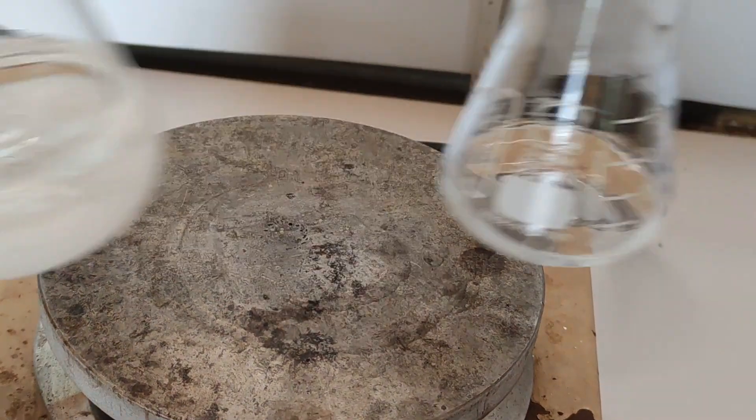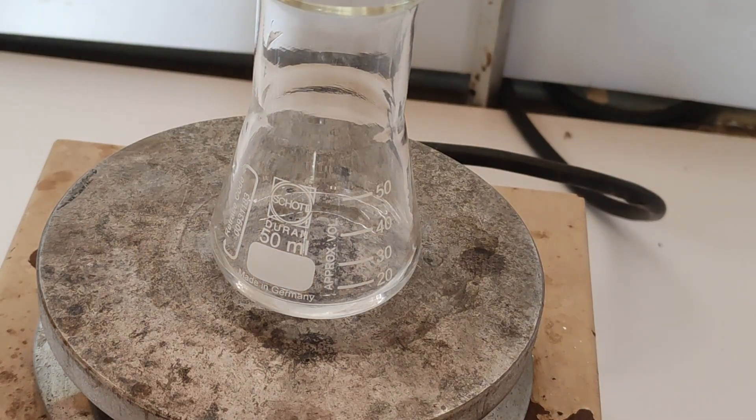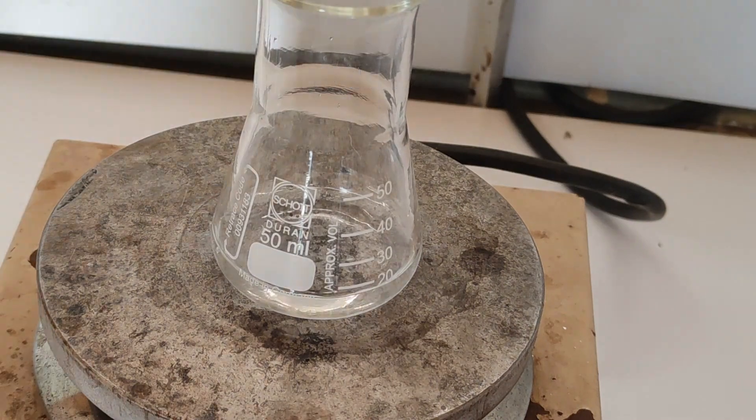To a conical beaker is added about 10 milliliters of water and the rest of the sodium hydroxide solution. The sodium borohydride is then added and stirred until completely dissolved.